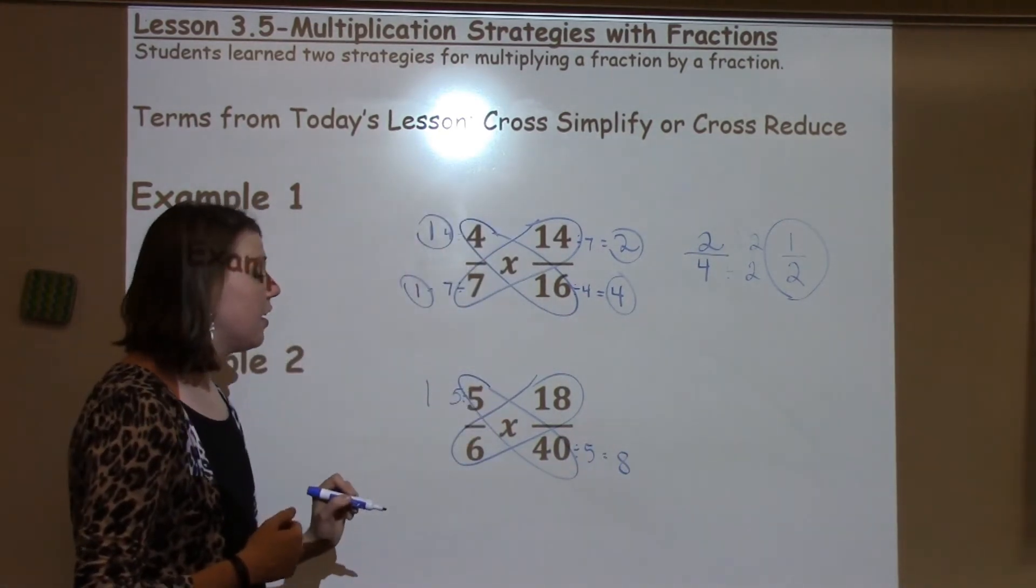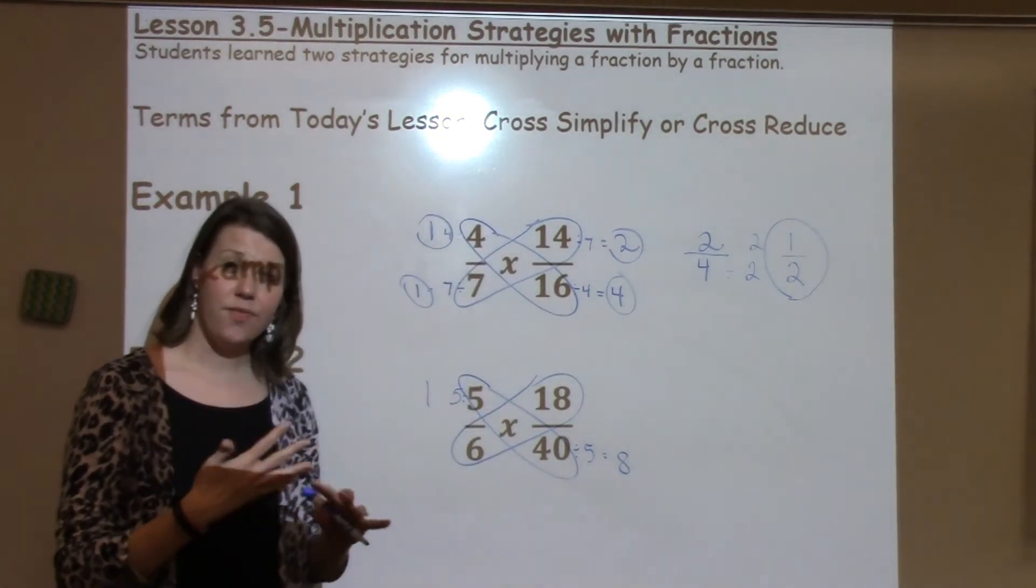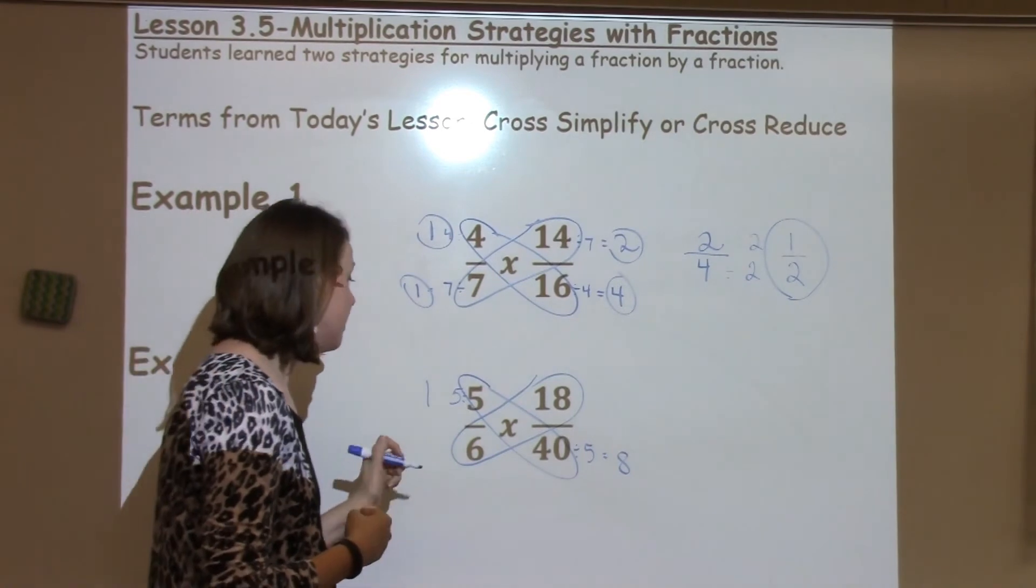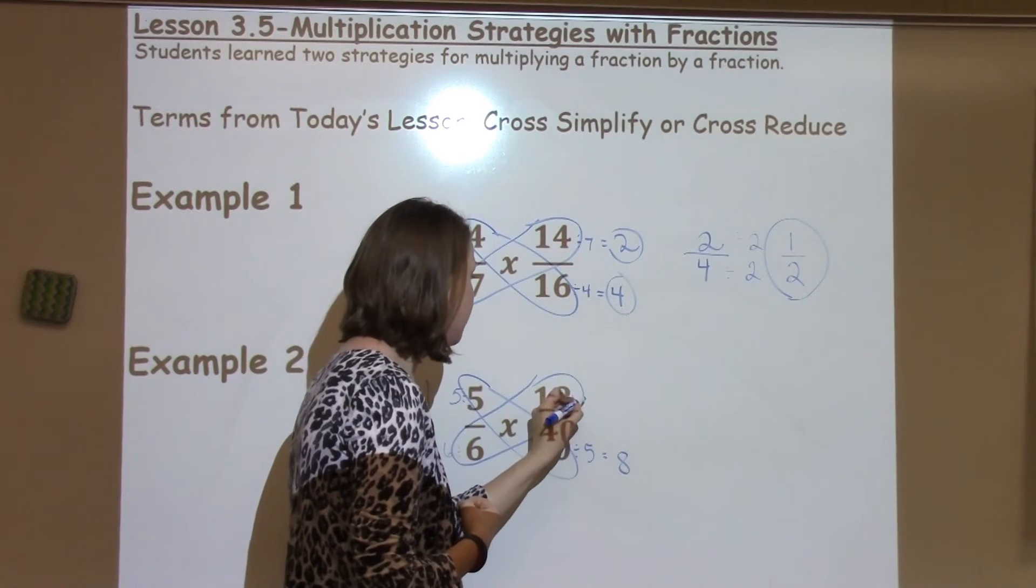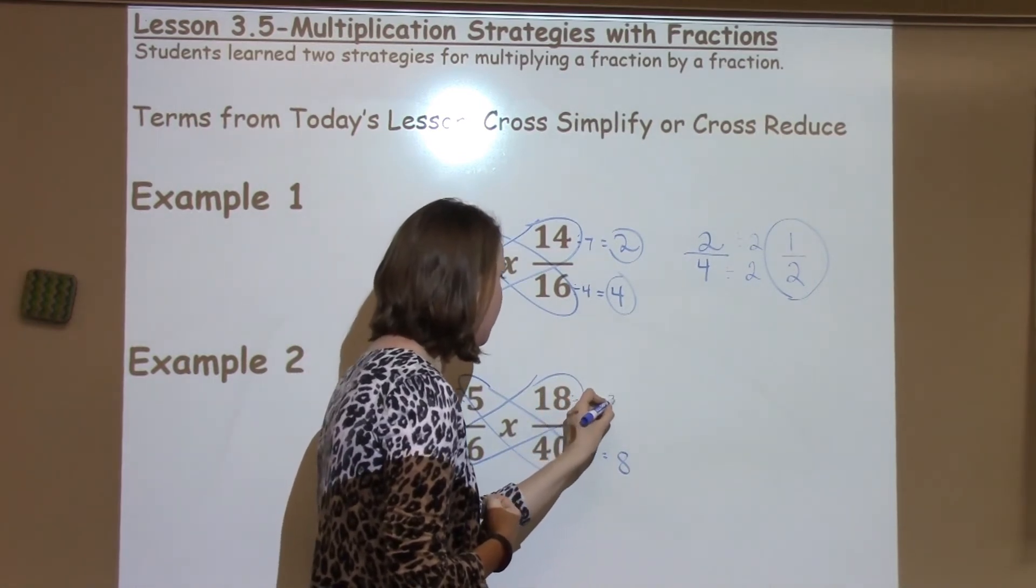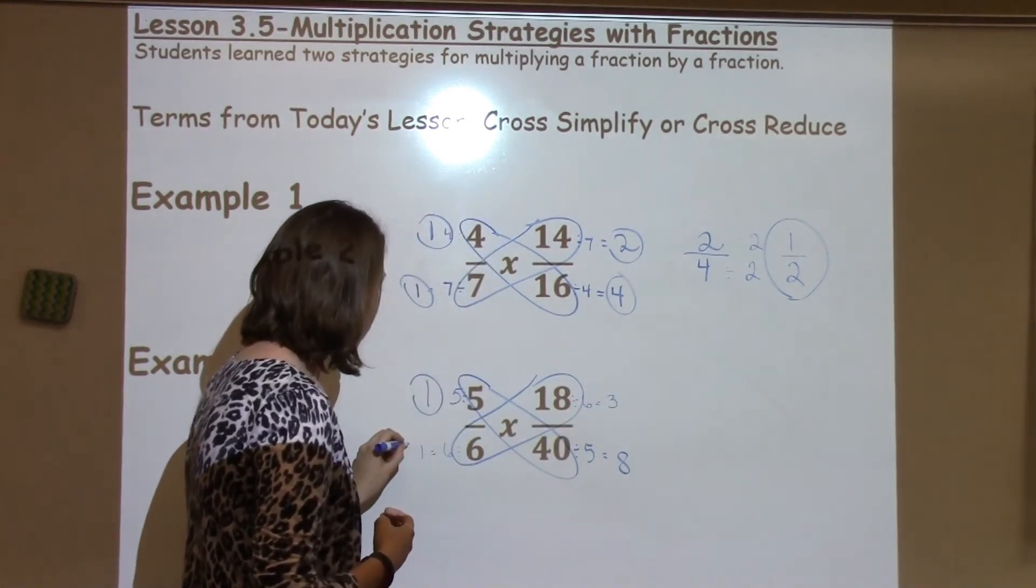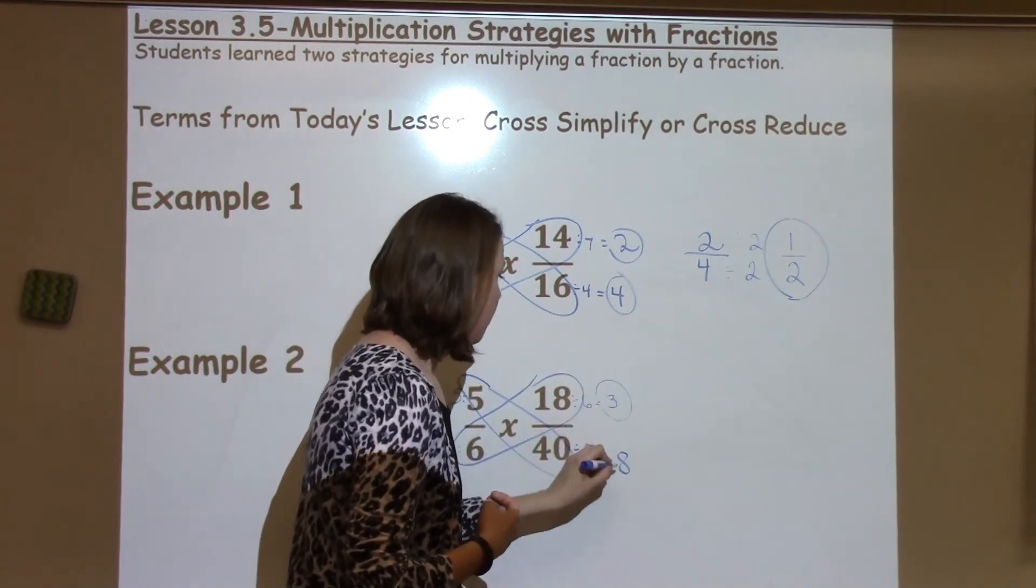My 6 and 18, it takes me a second to think of that one. It's not as familiar as other ones, but I do know it's 6. So I can take 6 divided by 6, which gives me 1. 18 divided by 6 gives me 3. I'm going to go ahead and circle those numbers on the outside that I'm going to use to multiply.